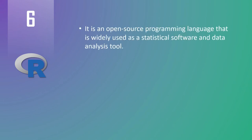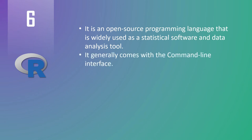At number six we have R. R is an open source programming language that is widely used as a statistical software and data analysis tool. R generally comes with a command line interface. The R language competes with Python and outperforms it in terms of statistical analytics.